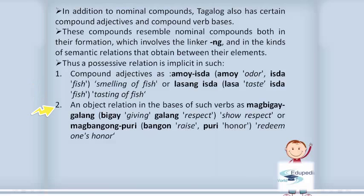An object relation is the basis of such compound verbs as 'magbigay galang' (bigay = giving, galang = respect: to show respect) and 'magbangon puri' (bangon = raise, puri = honor: to restore one's honor).